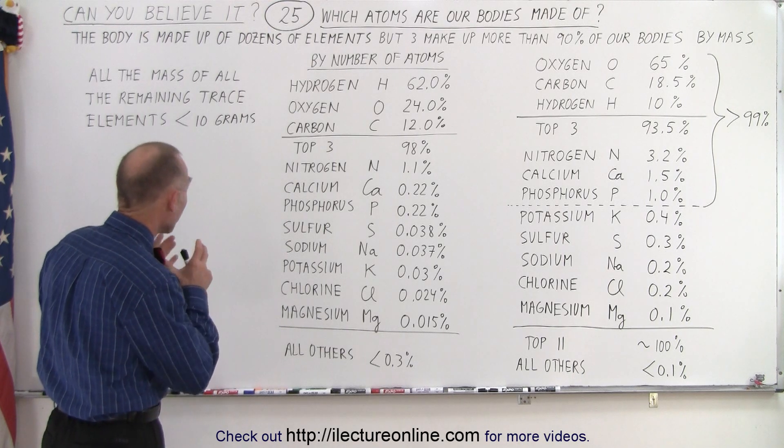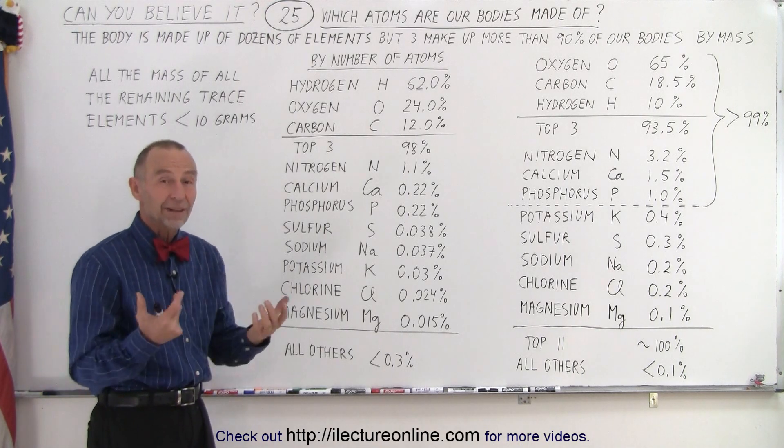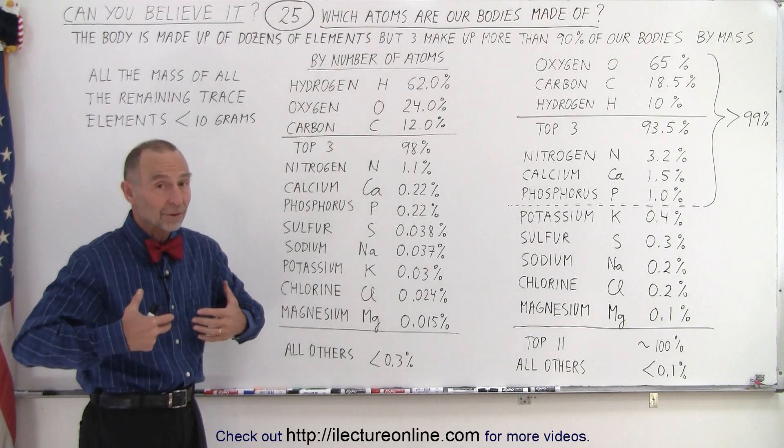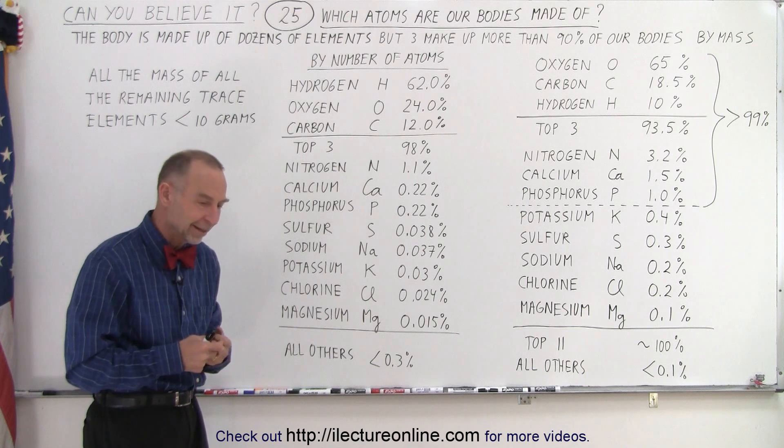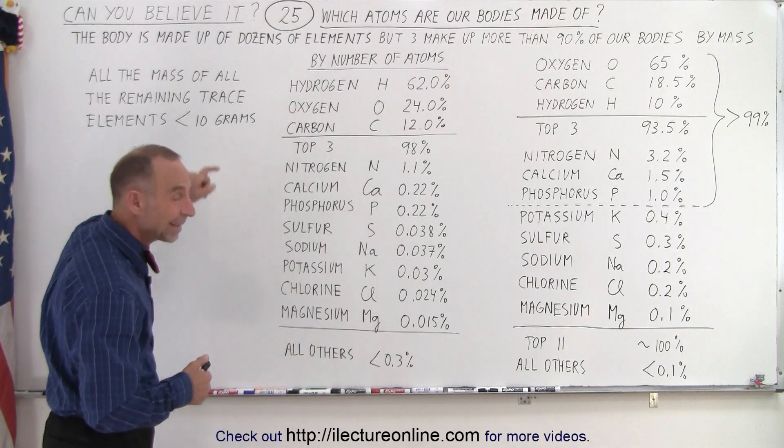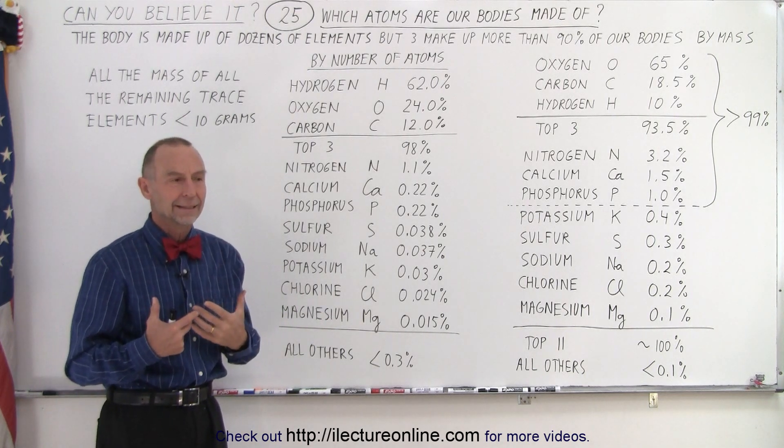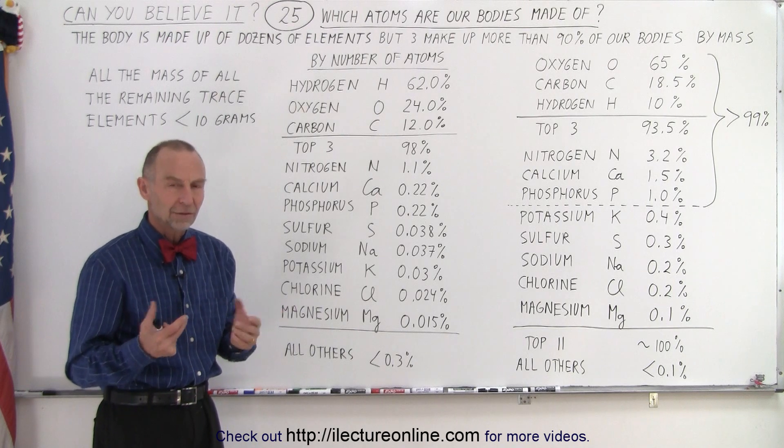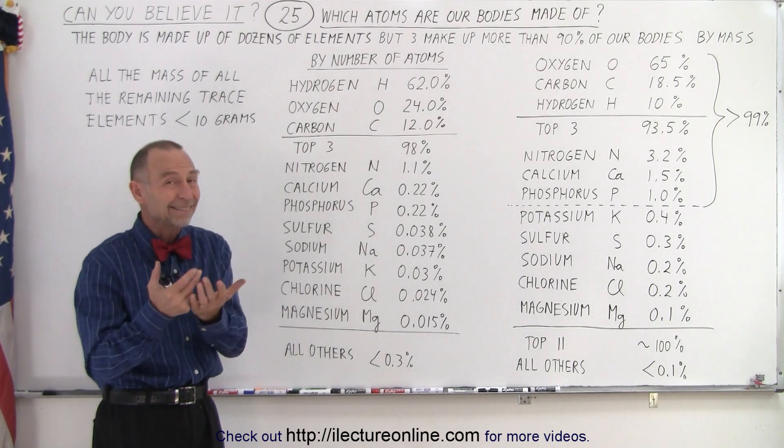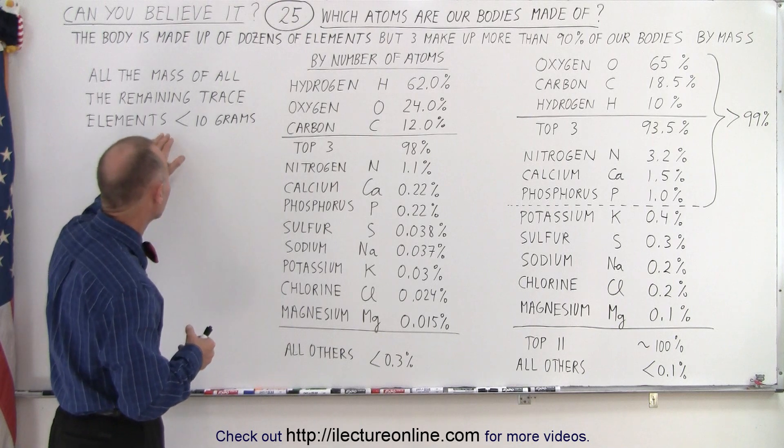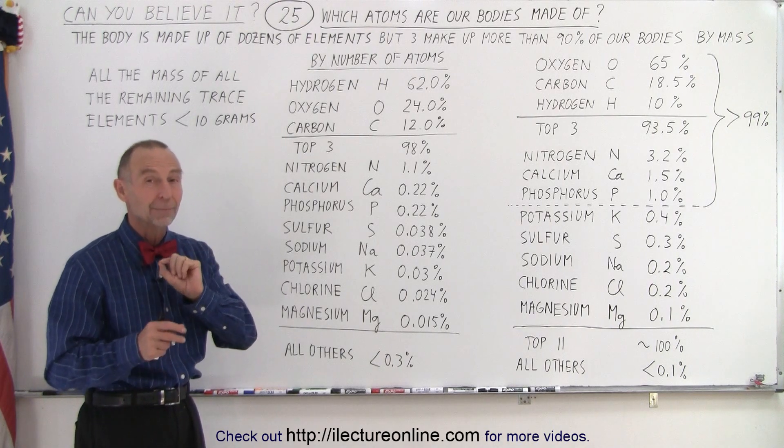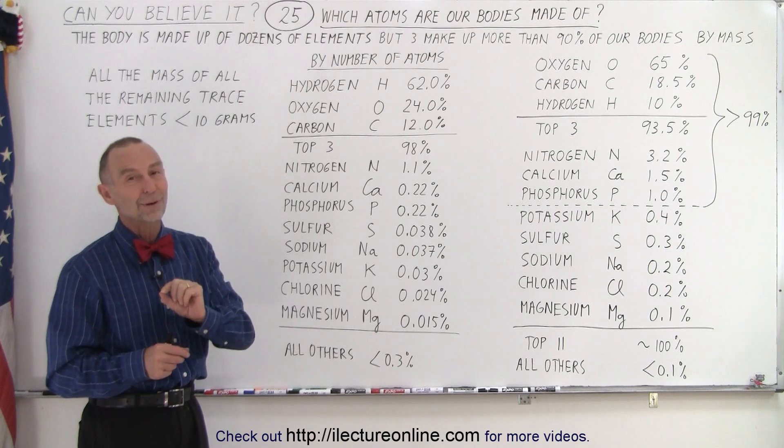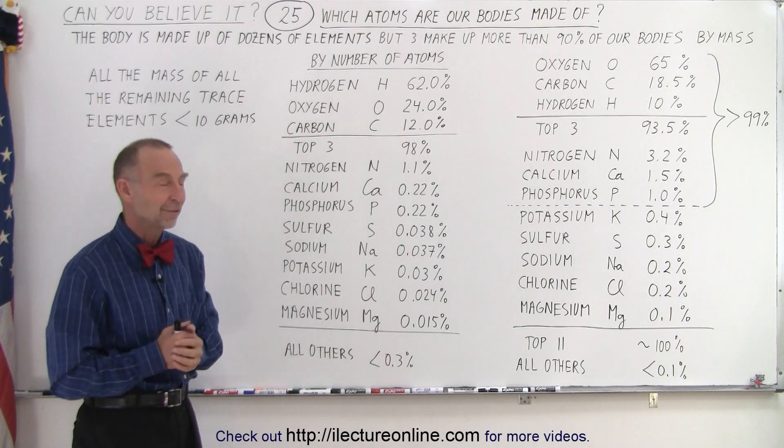All the mass of all the remaining trace elements, the trace elements that we need in our bodies, and sometimes we take supplements just to make sure we have those trace elements in our bodies, well, they make up less than 10 grams of our body. 10 grams, wow, that is a very small amount. That is less than a half ounce of our bodies are made up of all the remaining trace elements. So just a very tiny amount. But those, many of those are extremely important and absolutely necessary for life as well.